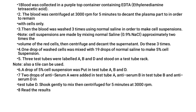For the test, get a drop of 5% cell suspension and place it into labeled tubes. You need three tubes: label them A, B, and D. In each tube, place a drop of cell suspension. Then add two drops of Antiserum A into tube A, two drops of Antiserum B into tube B, and two drops of Antiserum D into tube D. Then centrifuge the tubes.